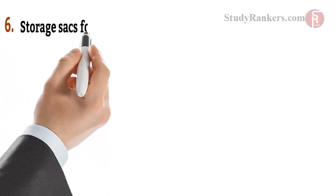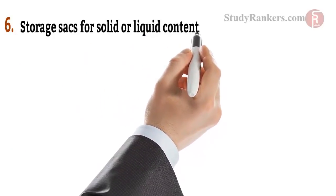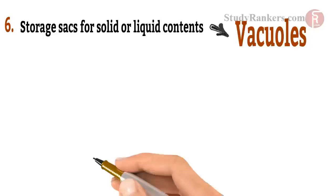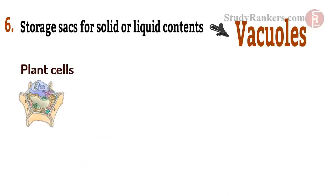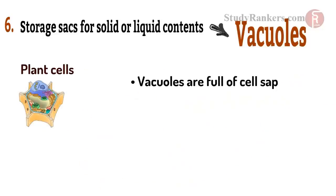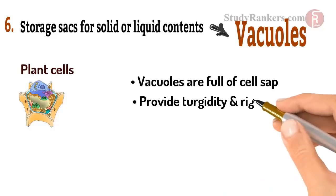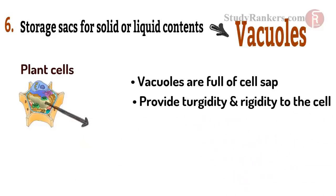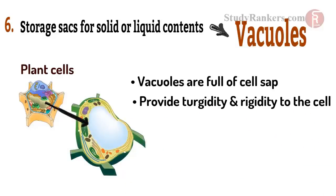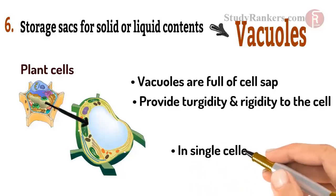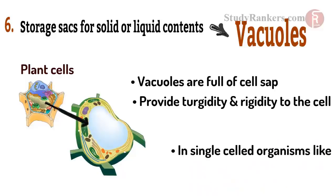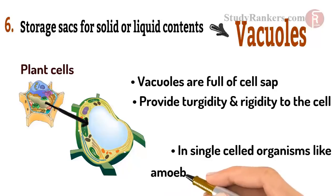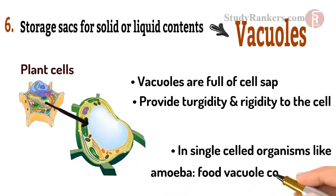At last, we will know about vacuoles — storage sacs for solid or liquid contents. In plant cells, vacuoles are full of cell sap and provide turgidity and rigidity to the cell. In single-celled organisms like amoeba, the food vacuoles contain the food items that the amoeba has consumed.